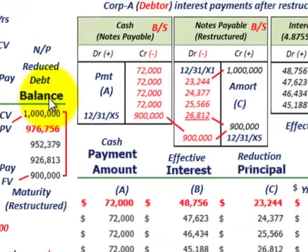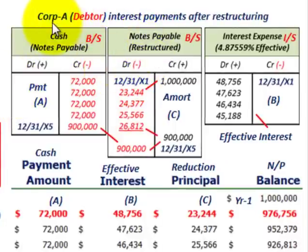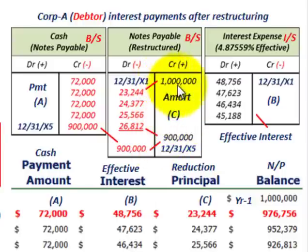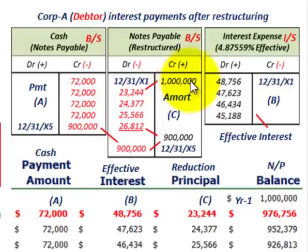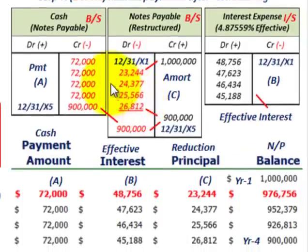Let's look at how we record this on the balance sheet and income statement from Corp A's perspective. Rather than setting up a premium on notes payable, we'll show the reduction directly to notes payable. We started with the million dollar carrying value. Now let's look at the cash account and notes payable — the restructured amount on the balance sheet as a liability.